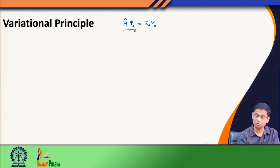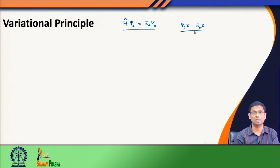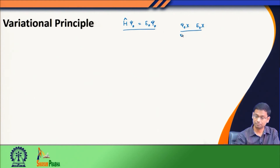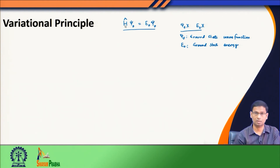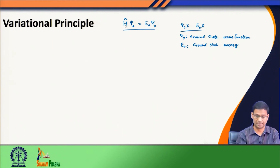This would be the solution we would love to have, but the problem is that our Hamiltonian is so complex that I do not know ψ₀ nor do I know E₀ exactly. So how do I get ψ₀ and E₀ for this problem — where ψ₀ is the ground state wavefunction and E₀ is the ground state energy of a Hamiltonian with complicated operators that we do not know how to solve exactly?